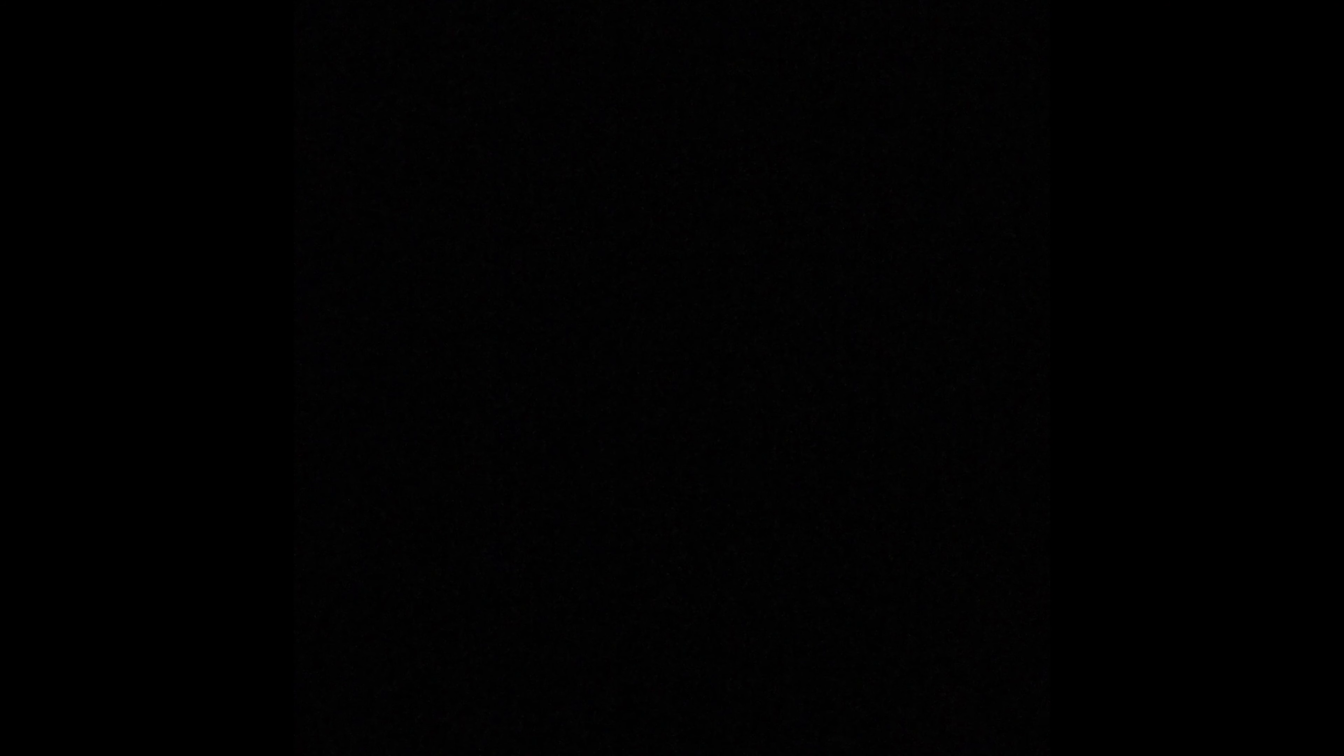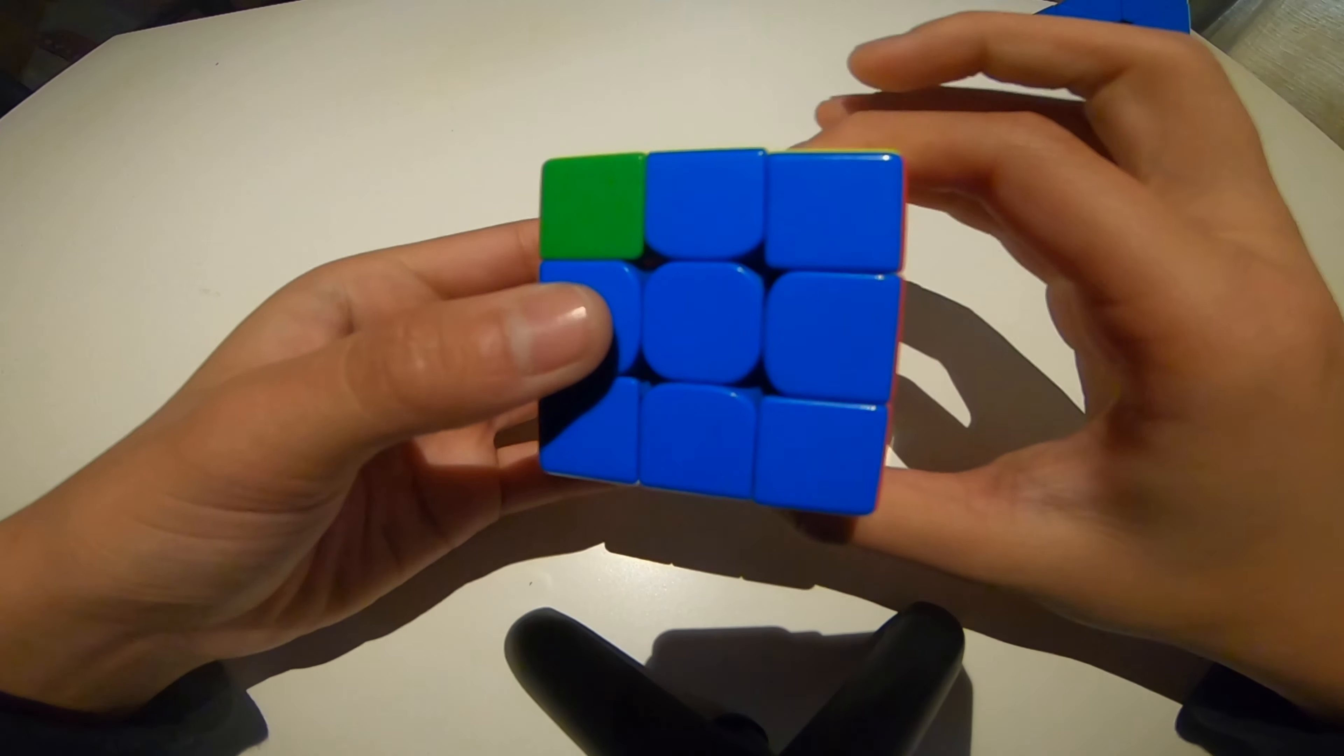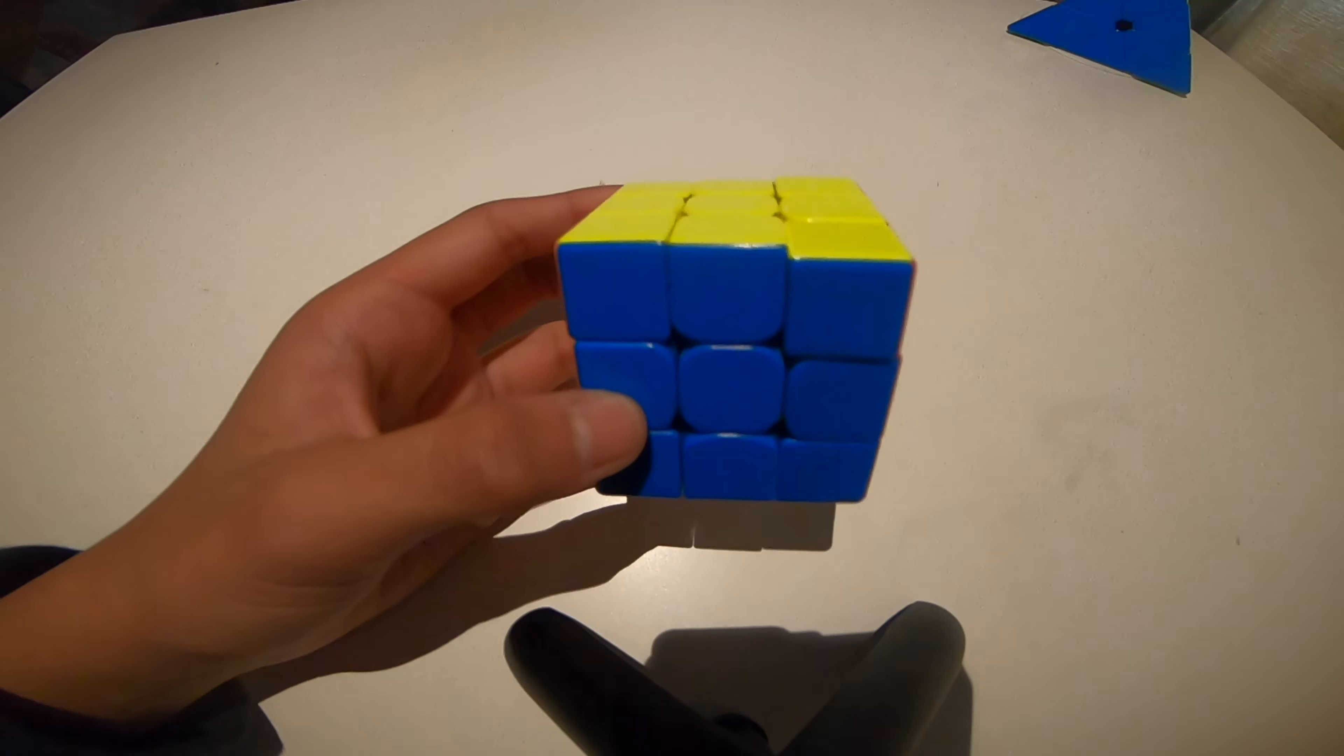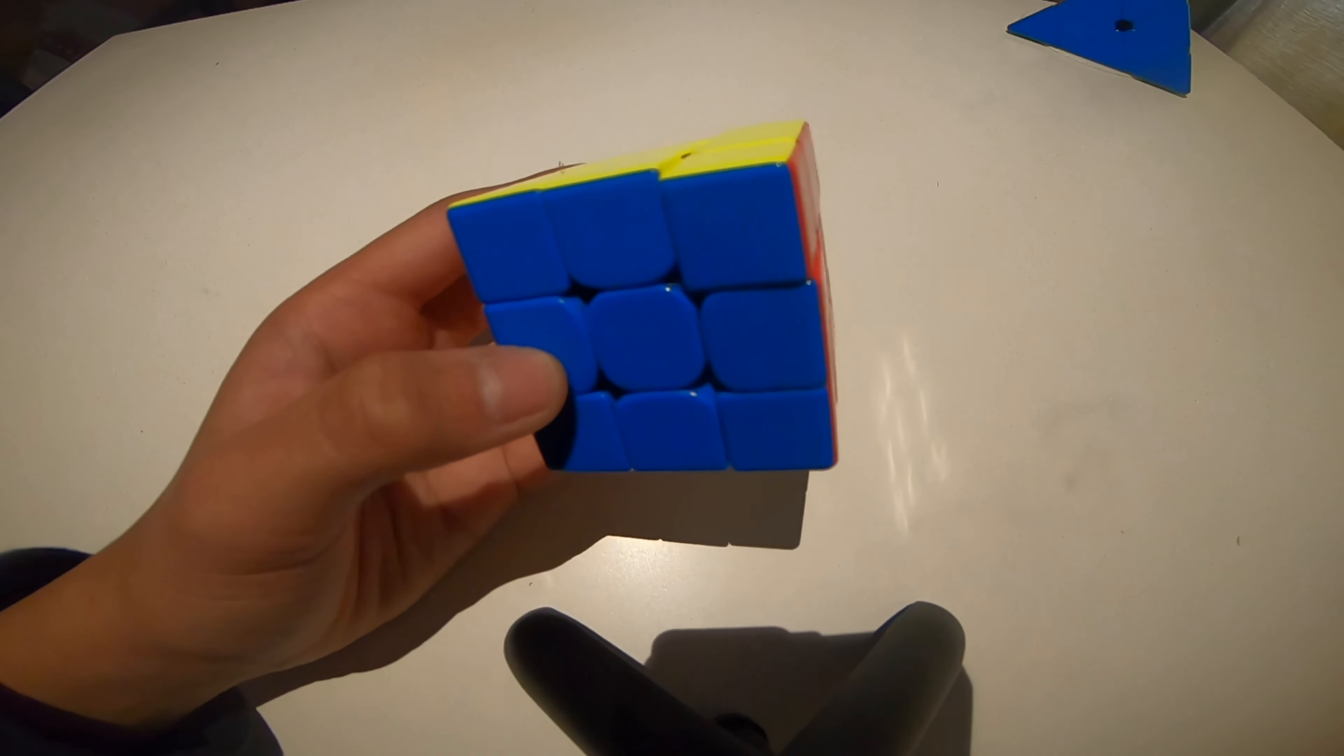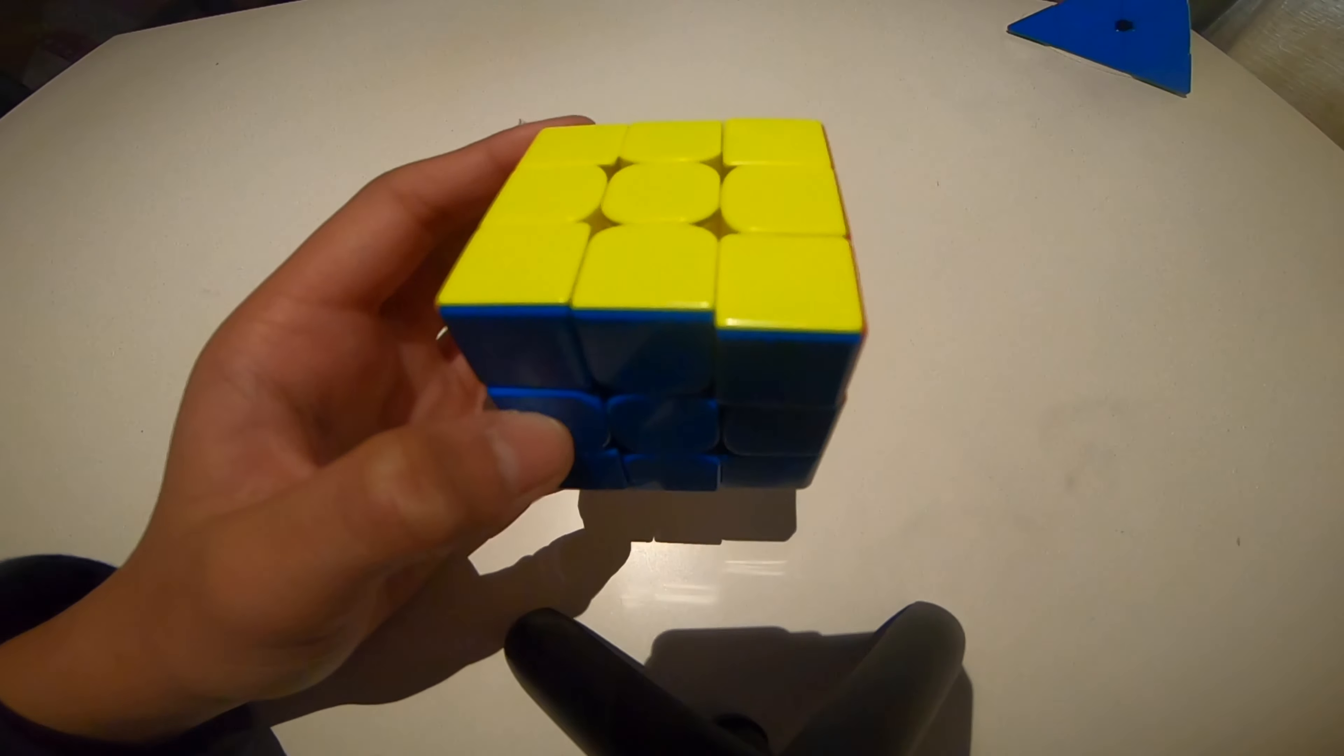All right, last one for the easy round. [performs algorithm] Let's see what I was doing. I was doing the AB-perm, but if you said AA-perm as well, I'll award you a point for that.